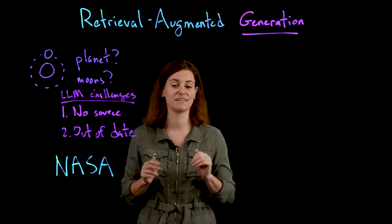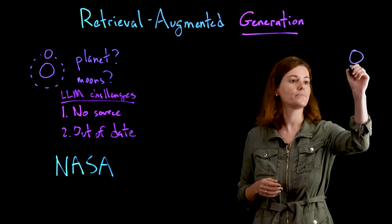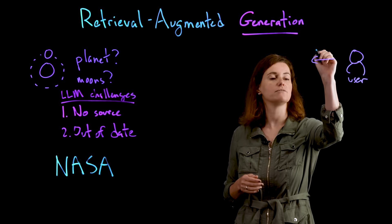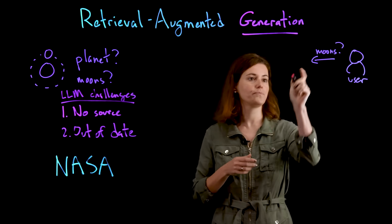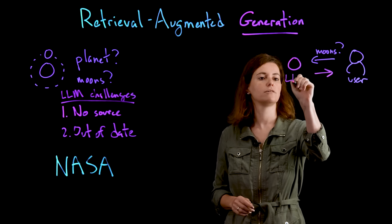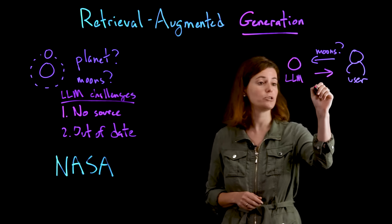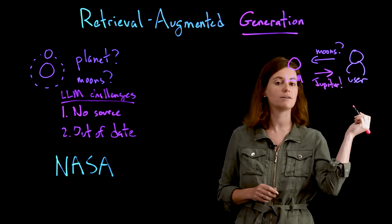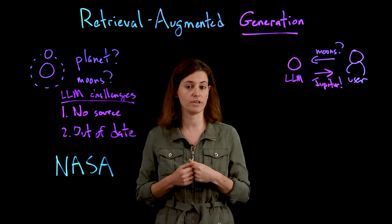So what does this have to do with large language models? How would a large language model have answered this question? Let's say a user asks this question about moons. A large language model would confidently say it has been trained, and from what it knows in its parameters during training, the answer is Jupiter. The answer is wrong, but the large language model is very confident in what it answered.